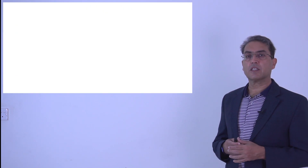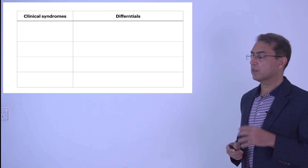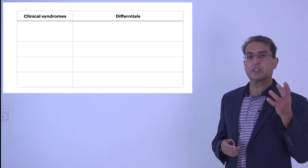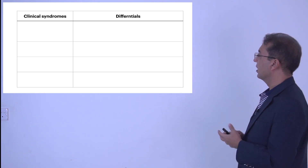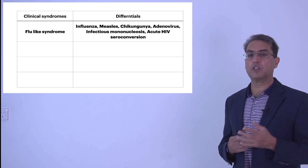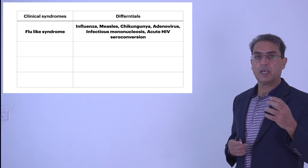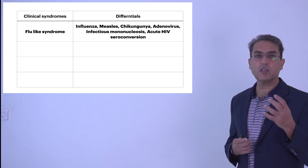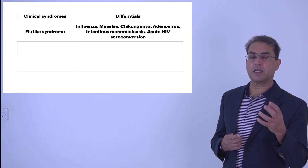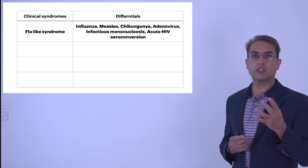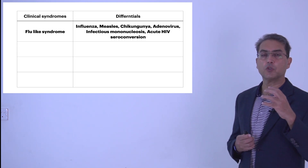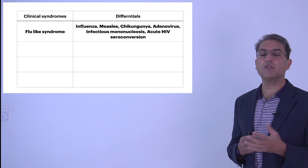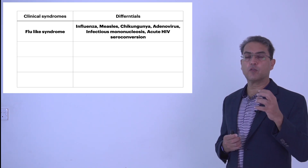Now, what are the different clinical syndromes a patient may present with? Patients with dengue may present with different clinical features. If they present with flu-like illness, the differentials include influenza, measles, chikungunya — which is an important differential because it presents similarly to dengue but lacks the critical phase and plasma leakage — as well as adenoviruses, infectious mononucleosis, and acute HIV seroconversion.